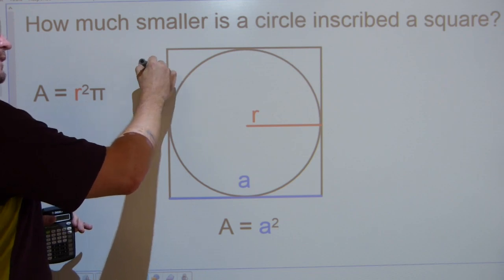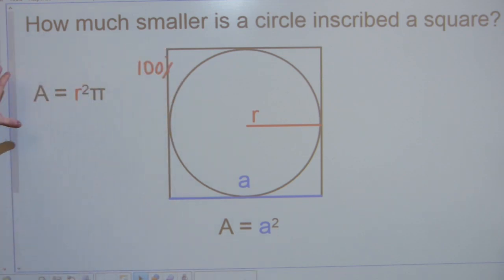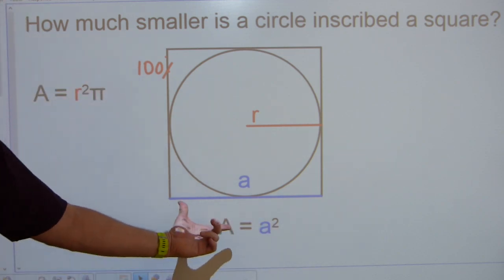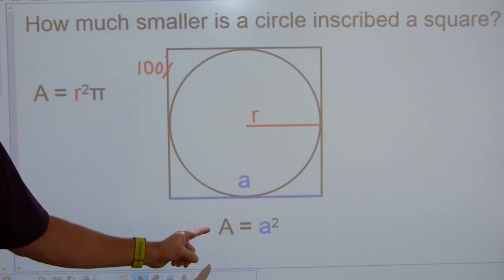If the square is being 100%, and this formula here is the area of the circle here, and this formula here, the side length, lowercase a, and uppercase A is being the area of the square.